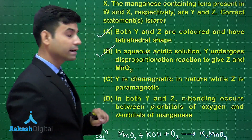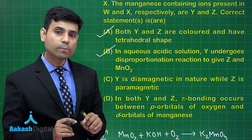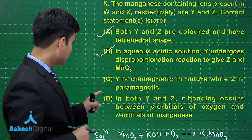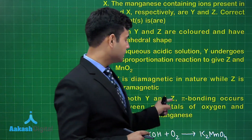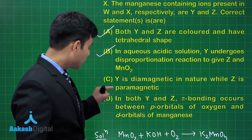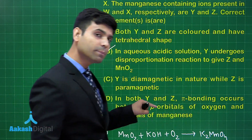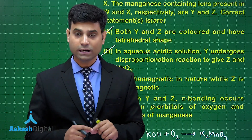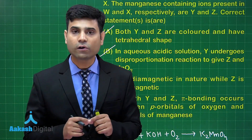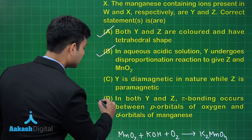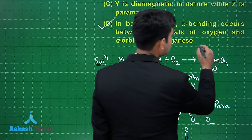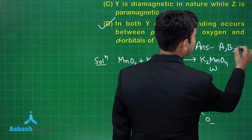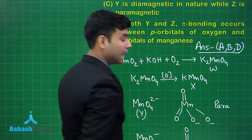Option C is wrong — MnO4²⁻ is paramagnetic while MnO4⁻ is diamagnetic in nature. Option D says in both Y and Z, pi bonding occurs between P orbitals of oxygen and D orbitals of manganese. In both MnO4²⁻ and MnO4⁻, there is formation of p-pi to d-pi bond, hence this is correct. The correct answers are option A, option B, and option D.